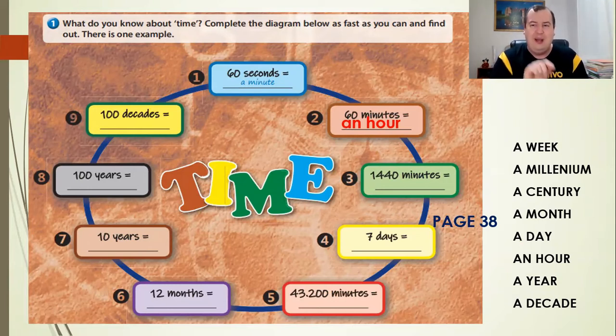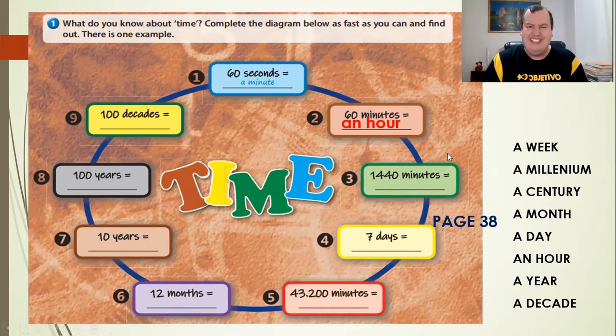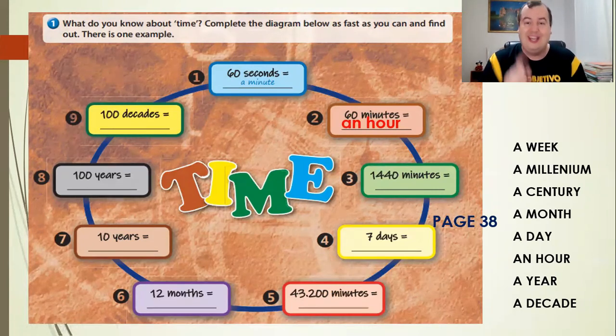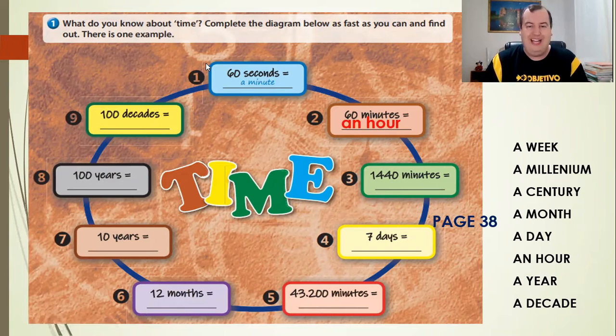Tenta fazer sozinho agora. Pausa a aula, faz o diagrama até o número nove, usando as pistas que o teacher deixou aqui pra você. E assim que você terminar, olha só, você dá o play na aula novamente. Será que você consegue completar todos? Aposto que sim. Vai lá, tente completar e depois você dá o play na aula. Combinado? Vai lá.